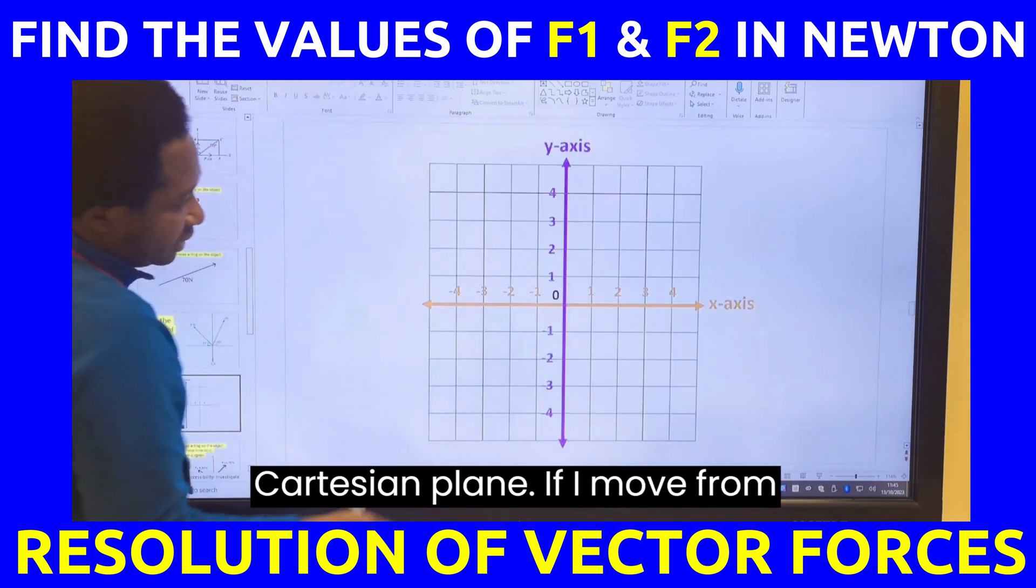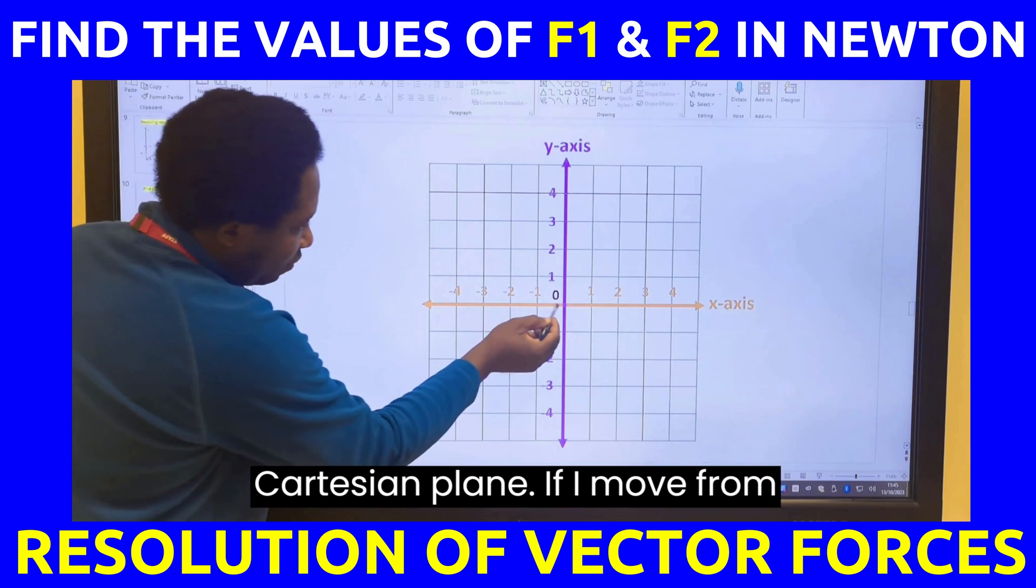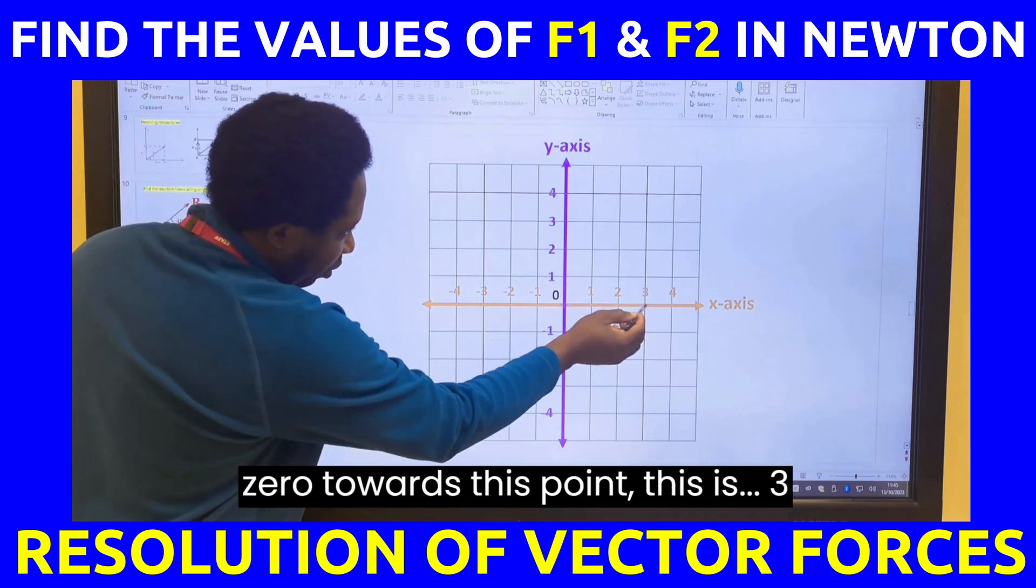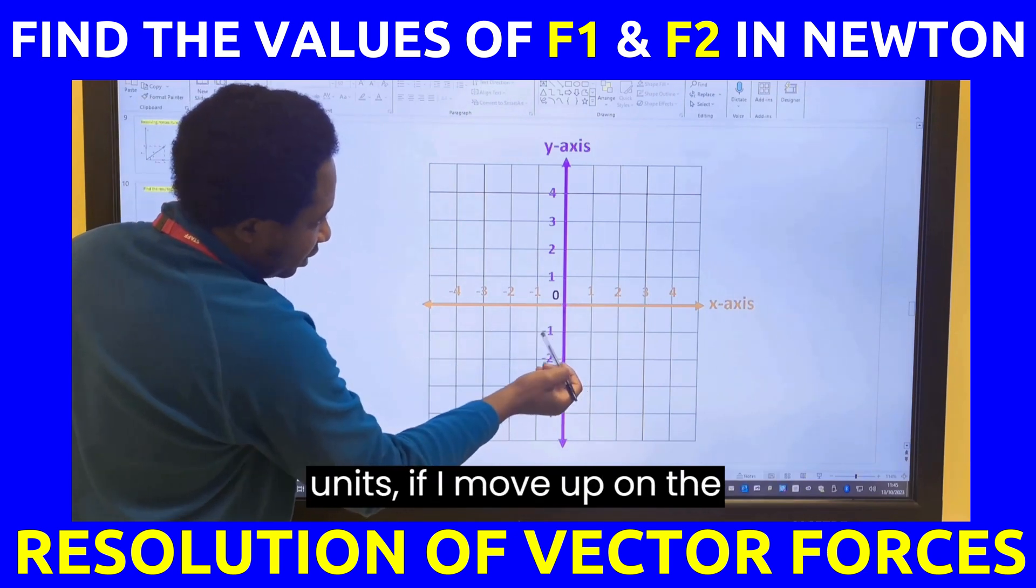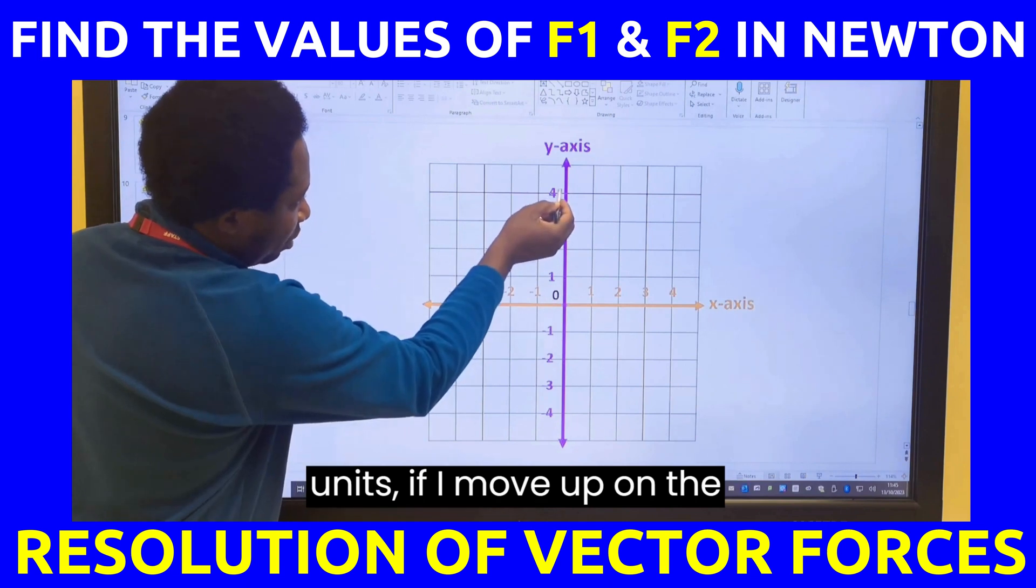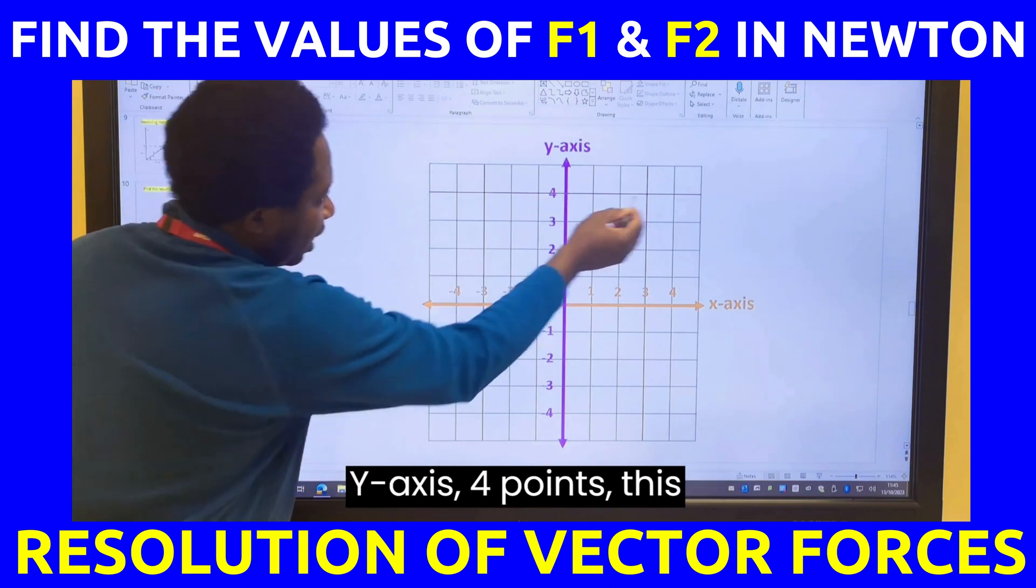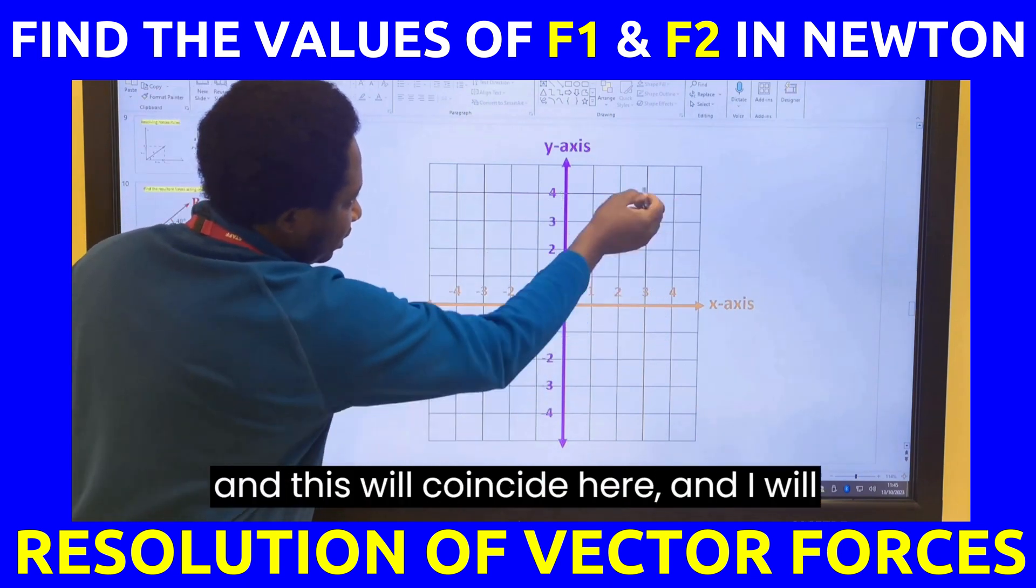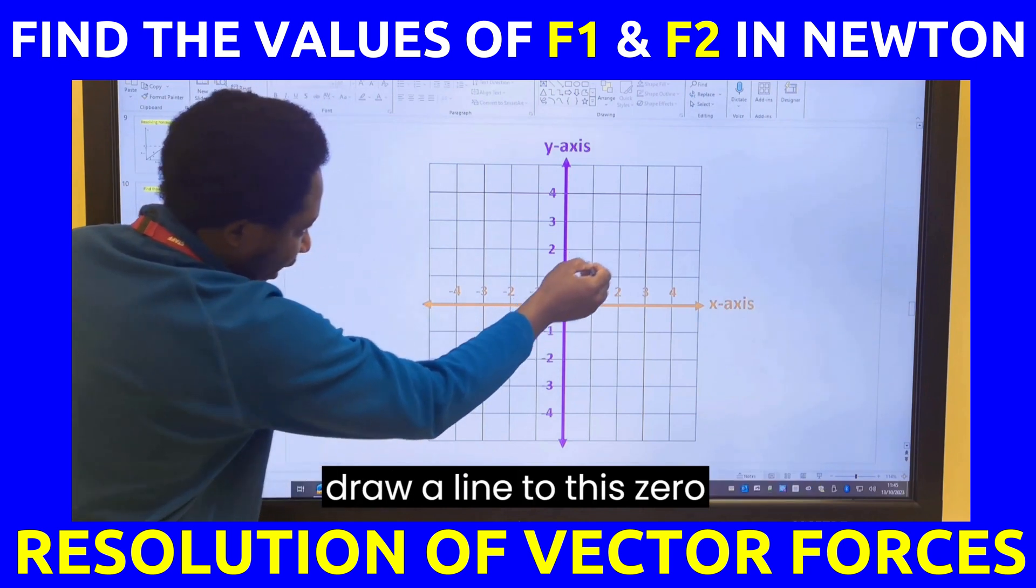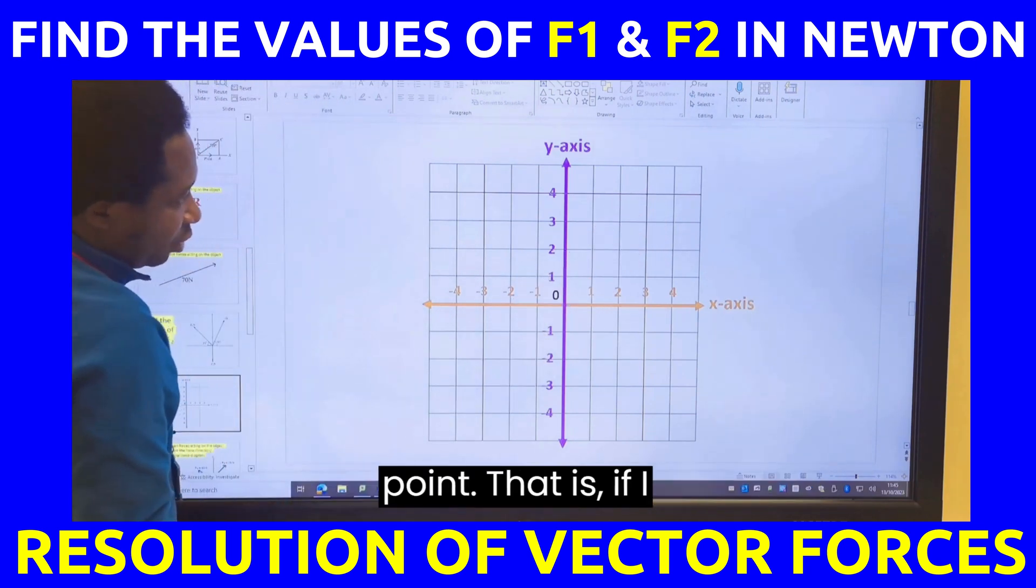This is the Cartesian plane. If I move from 0 towards this point, this is 3 units. If I move up on the y-axis, 4 points. This and this will coincide here and I will draw a line to this 0 point.